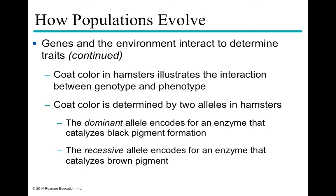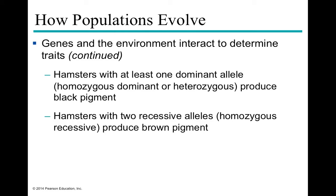A good example illustrating the interaction between genotype and phenotype is coat color in hamsters. Coat color is determined by two alleles: one dominant allele that catalyzes black pigment, denoted capital B, and one recessive allele encoding brown pigment, denoted lowercase b. Hamsters that are homozygous dominant (BB) or heterozygous (Bb) produce black pigment, because you only need one copy of a dominant allele to produce a phenotype. To have the recessive phenotype, you need a homozygous recessive individual (bb), which produces brown pigment.